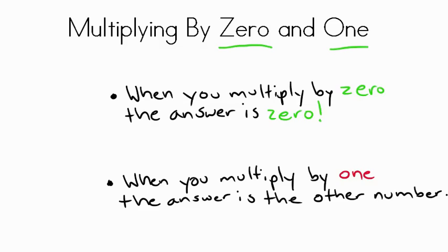Nice job. To review, when you multiply by 0, the answer is 0. It's always 0. For example, 4 times 0 is 4 groups of 0, and the answer or product will be 0.